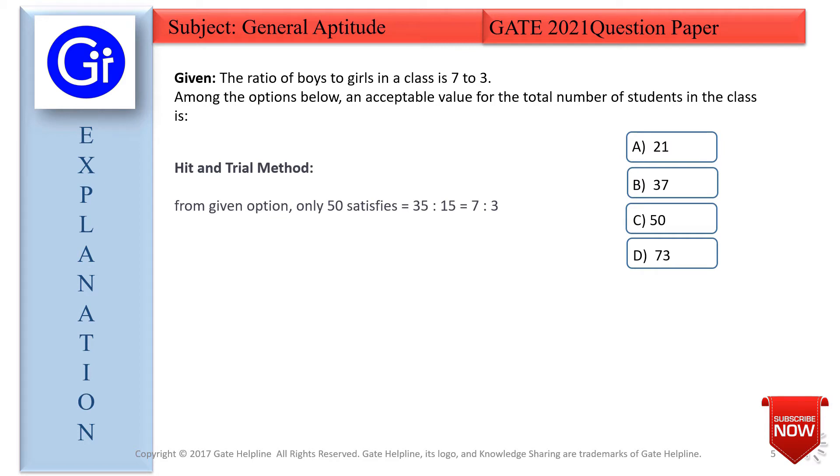Suppose you take 21. How to identify whether 21 is the answer? We'll find the multiples of the ratio and add them. First: 7 + 3 = 10, which is not in the options. Next, we multiply both sides with 2.